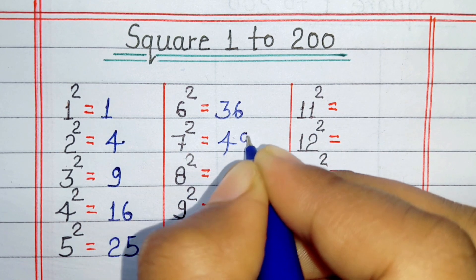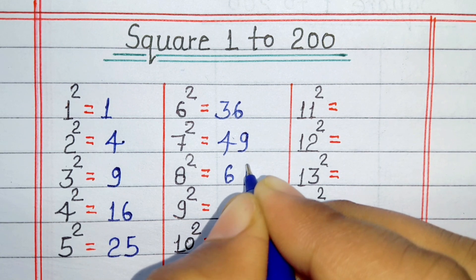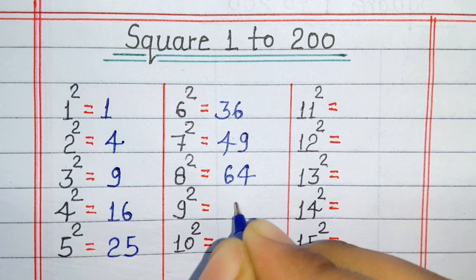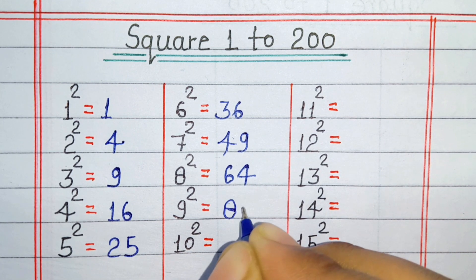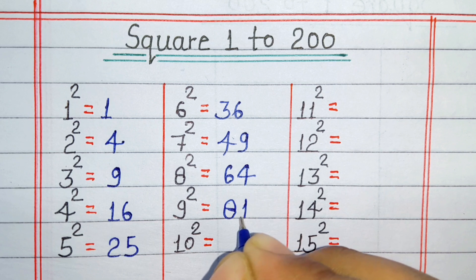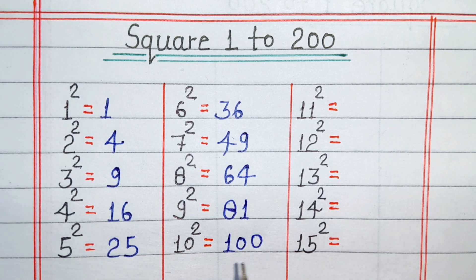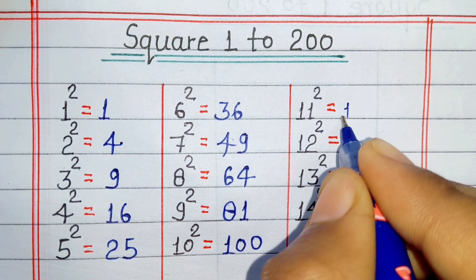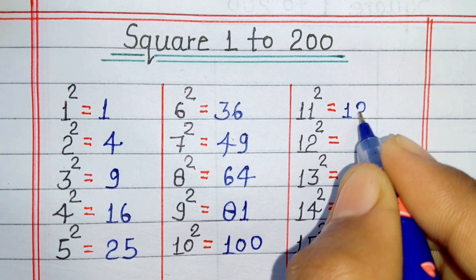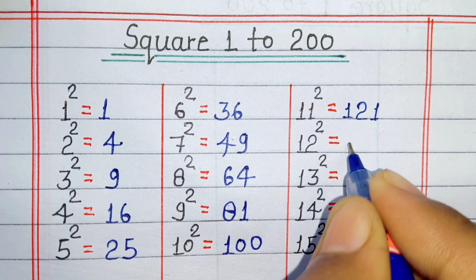Square of 7 is 49. Square of 8 is 64. Square of 9 is 81. Square of 10 is 100. Square of 11 is 121.